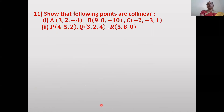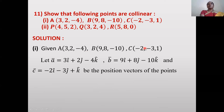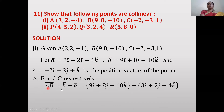Next problem: Show that points A(3, 2, -4), B(9, 8, -10), C(-2, -3, 1) are collinear. Let ā = 3i + 2j - 4k, b̄ = 9i + 8j - 10k, c̄ = -2i - 3j + k. Find AB̄ = b̄ - ā.